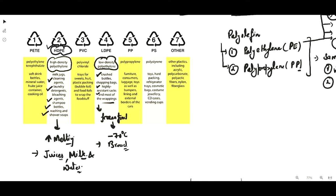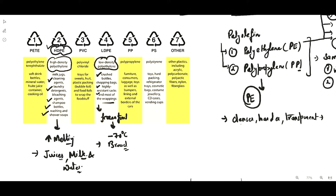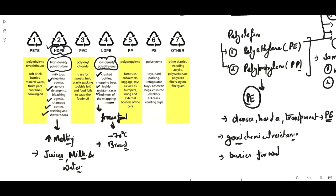Now let's talk about the other category of polyolefins, which is polypropylene. Polypropylene has the same properties as polyethylene, but it is actually denser, harder, and more transparent than PE plastic packaging. It has good chemical resistance — it does not allow chemicals to pass through the plastic films, and it is also a very good barrier for water vapor, not allowing water vapors to enter into the food material.